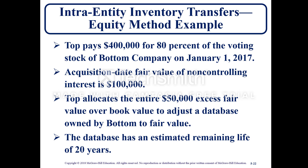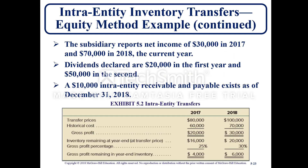For the intra-entity inventory transfers equity method example, Top pays $400,000 for 80% of the voting stock of Bottom Company on January 1st, 2017. The acquisition date fair value of the non-controlling interest was $100,000, representing the other 20%. Top allocates the entire $50,000 excess fair value over book value to adjust a database owned by Bottom to fair value, with an estimated remaining life of 20 years. The subsidiary reports net income of $30,000 in 2017 and $70,000 in 2018. Dividends declared are $20,000 in year one and $50,000 in year two. A $10,000 intra-entity receivable and payable exists as of December 31st, as shown in Exhibit 5.2.